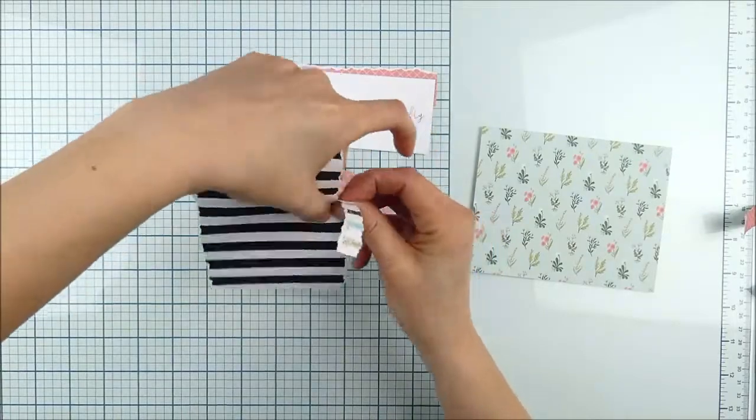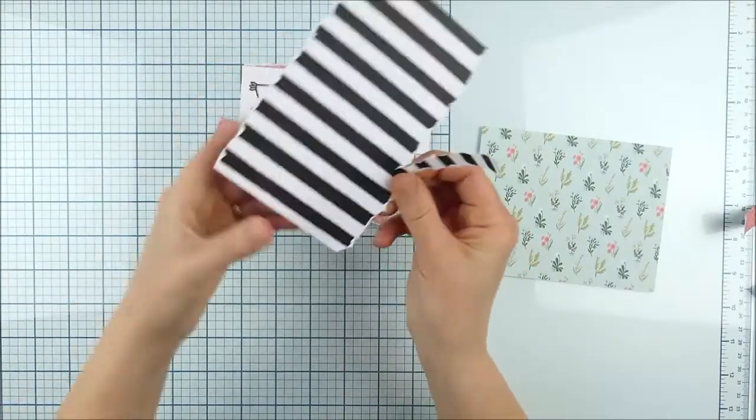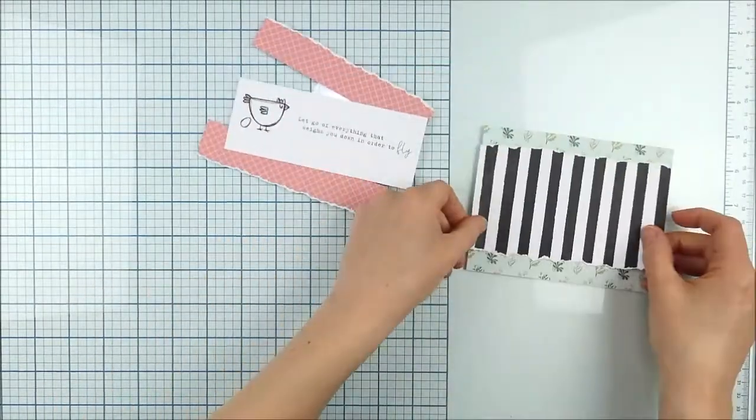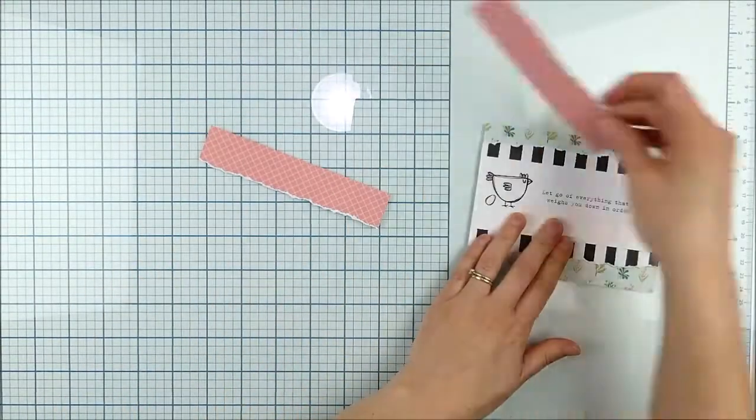So I went ahead and just tore another little piece off. I could have trimmed it like I did the pink one and trimmed it down, but it was just easier to tear another little bit off and do it that way.